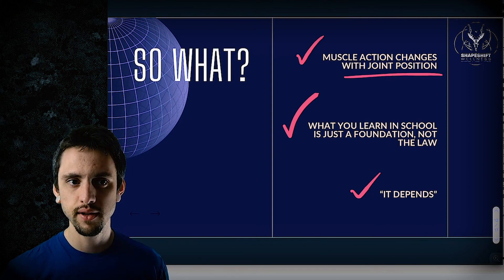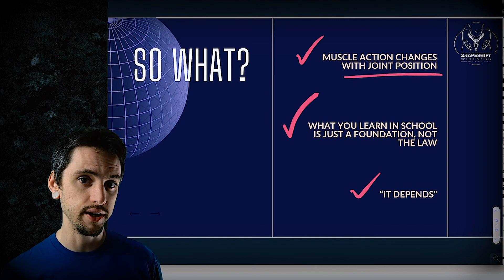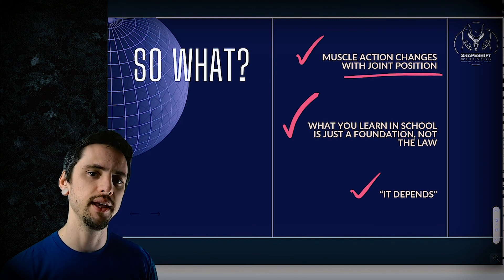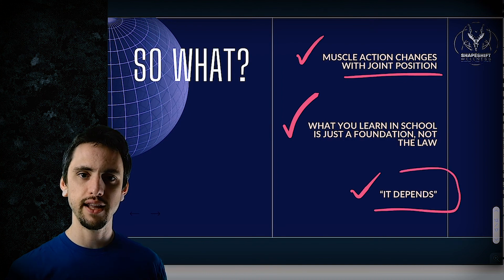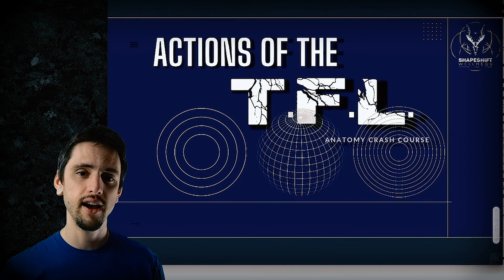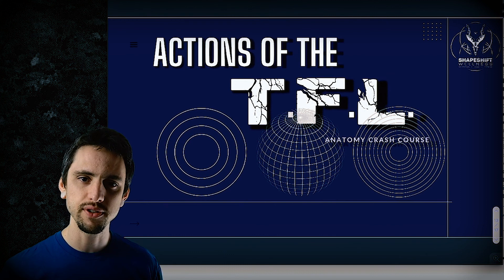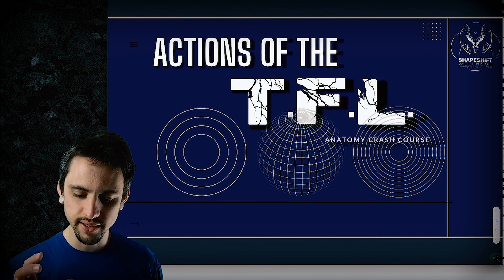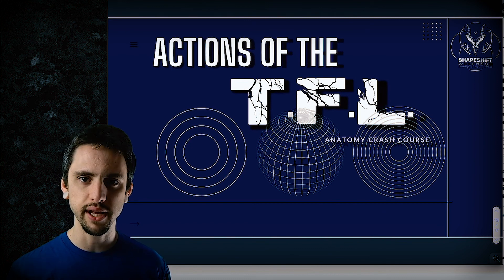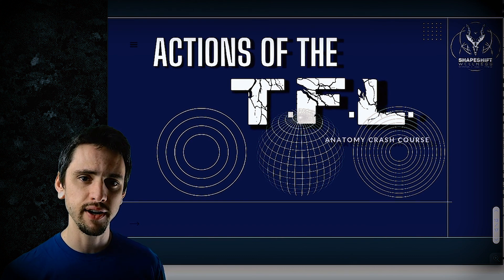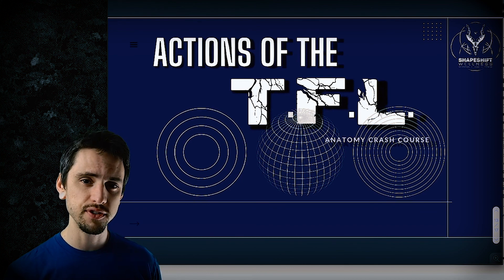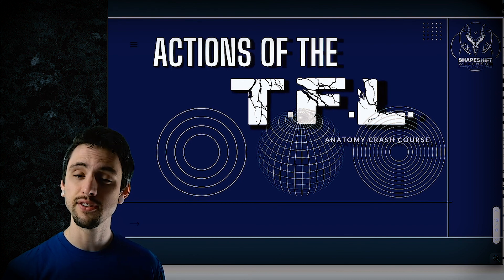If someone says 'the TFL is not an internal rotator,' that's true — it depends. If the hip is in flexion, yes it's an internal rotator. If the hip is in neutral, it is not. Context determines everything when studying anatomy. I hope this taught you a little about the actions of the TFL and encouraged you to think outside of textbook anatomy. There's a whole other layer of complexity when the body is in motion, and this goes for basically every muscle in your body. Share this with your geeky anatomy friends — ask questions in the comments, like the video, subscribe, and I'll see you on the next episode.